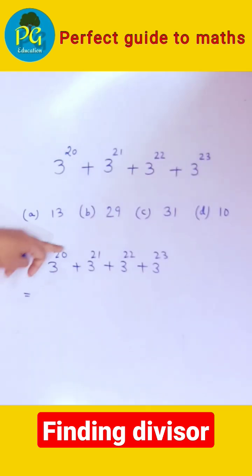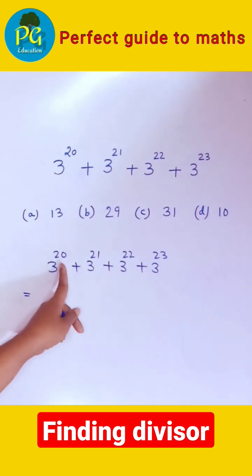Now you look at the powers of 3: 20, 21, 22, 23. So 20 is the smallest power of 3. So take 3 to the power 20 as common.